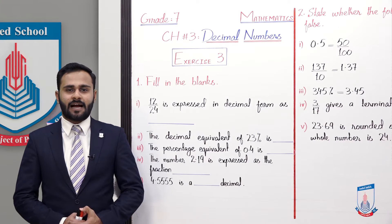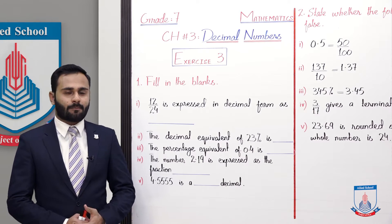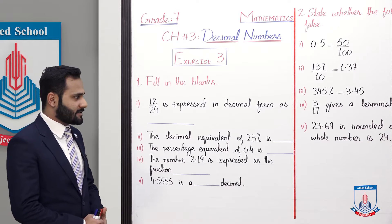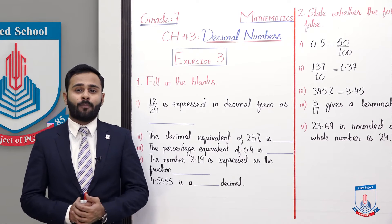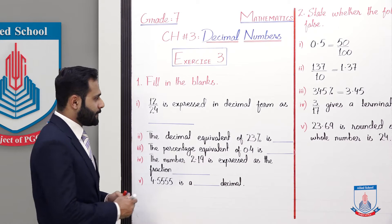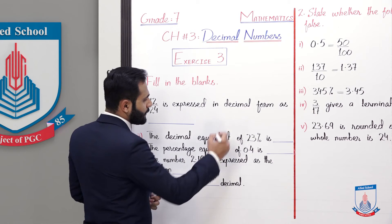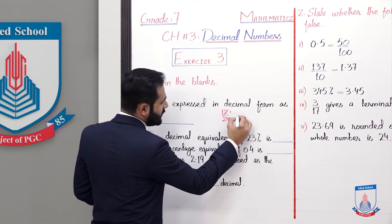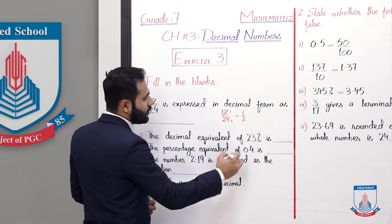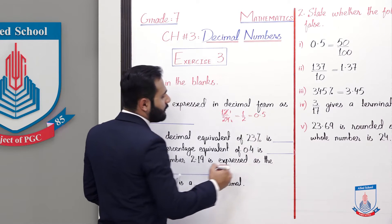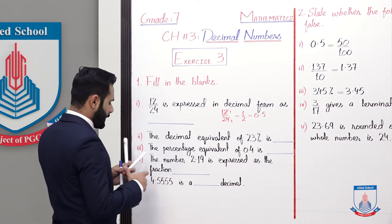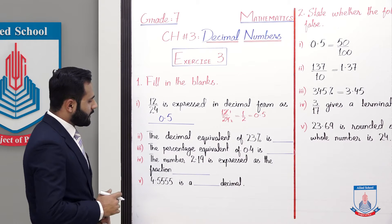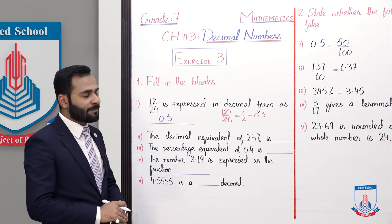Chapter 3: Decimal Numbers, Exercise 3, Question 1 — Fill in the blanks. The first blank: 12/24 expressed in decimal form. To solve 12/24, as you know 12 ones are 12 and 12 twos are 24, so it becomes 1/2. The decimal form of 1/2 is 0.5. So fill the blank: 0.5.